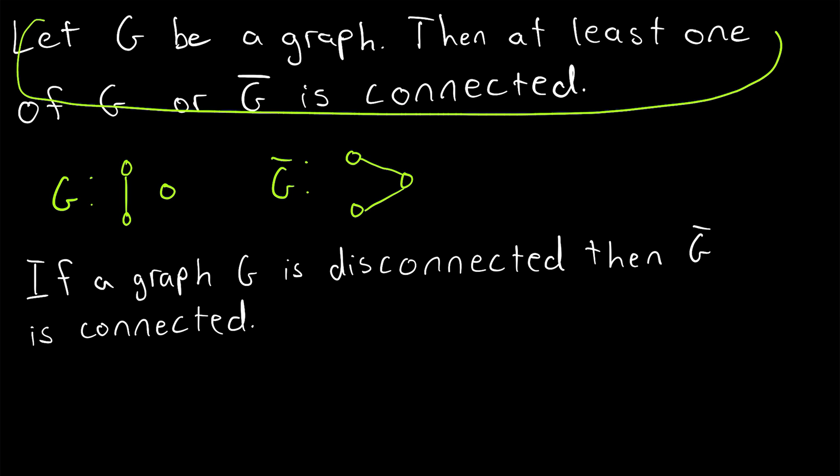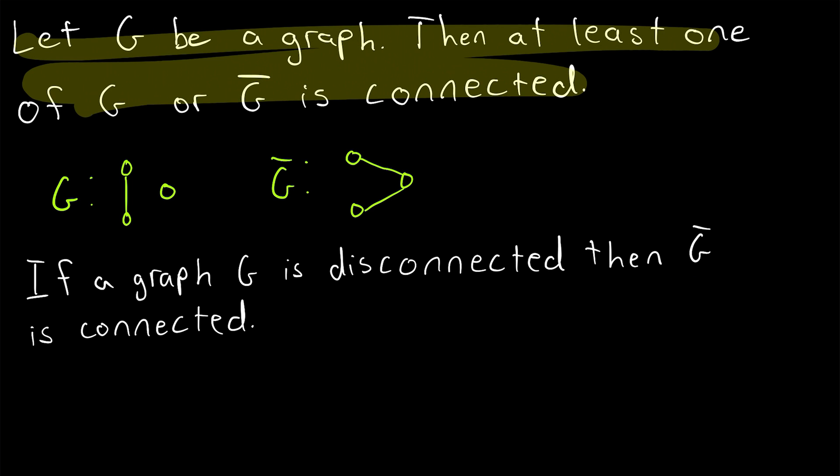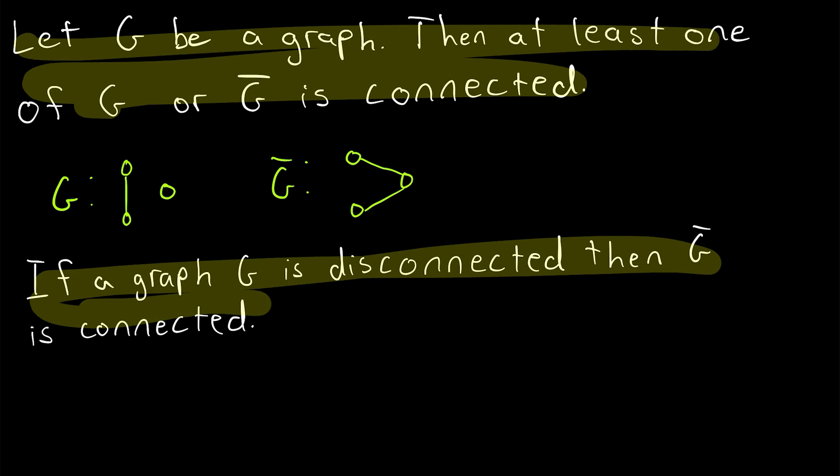Since this theorem tells us that at least one of a graph or its complement have to be connected, that means that if a graph G is disconnected then its complement must be connected. So these are equivalent statements, the second one is just a bit more suggestive of how our proof is going to proceed.